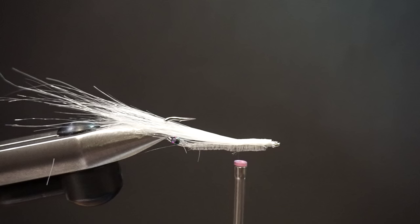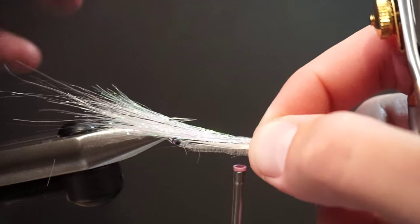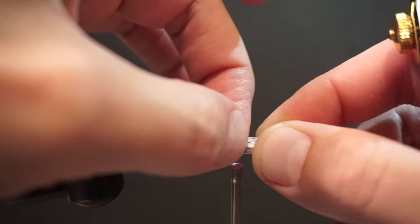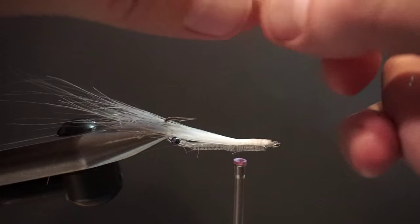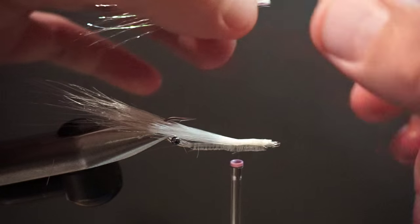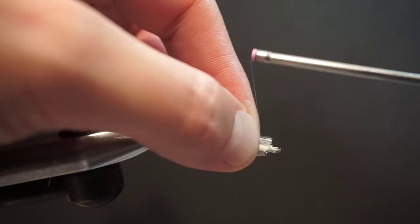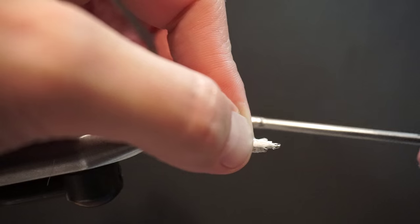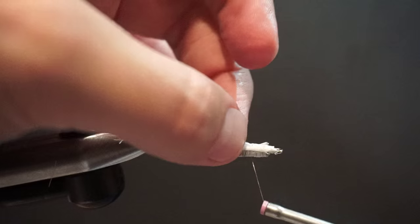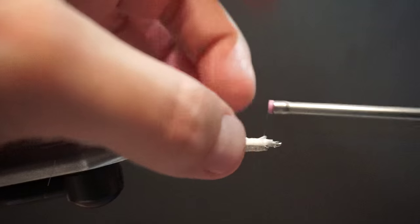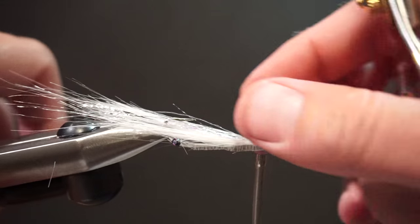Tie it down about halfway down the hook shank. And on top of that, just a little pinch of some pearl polar flash. Tie it down about a third of the way, kind of stacking these materials here. But we're keeping it real sparse. You want to have a narrow profile.